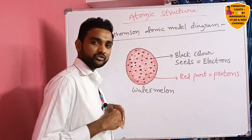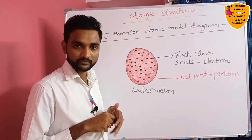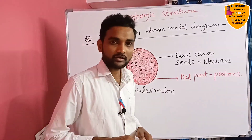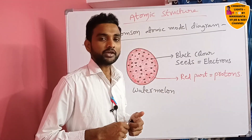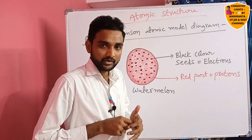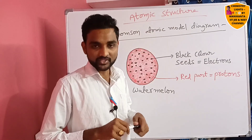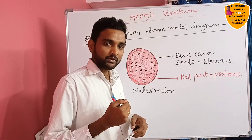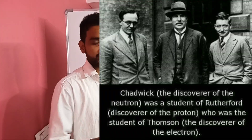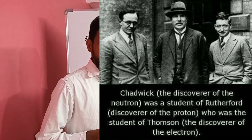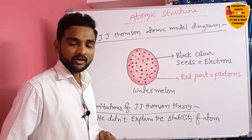Why did he not mention neutrons? Because neutrons were not yet discovered. Neutrons were discovered last among all these theories, in 1932 by James Chadwick. To note: electrons were discovered by J.J. Thompson; his student Rutherford discovered protons; and Rutherford's student James Chadwick discovered neutrons.